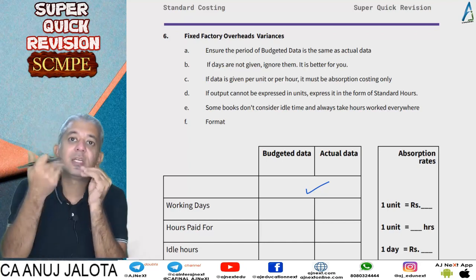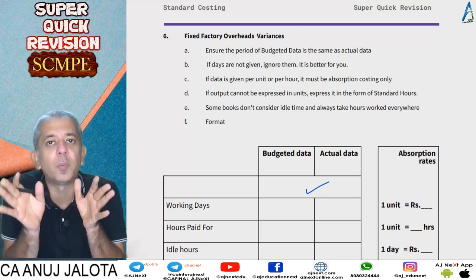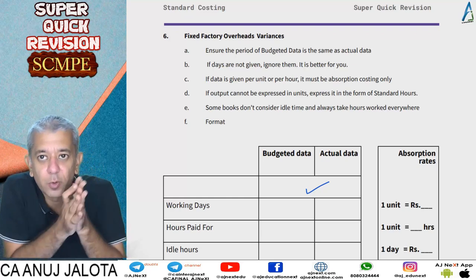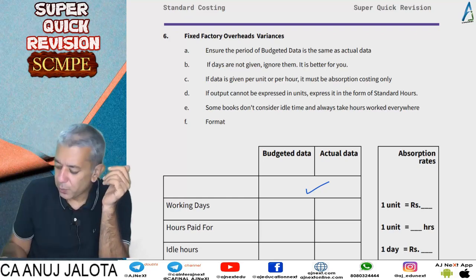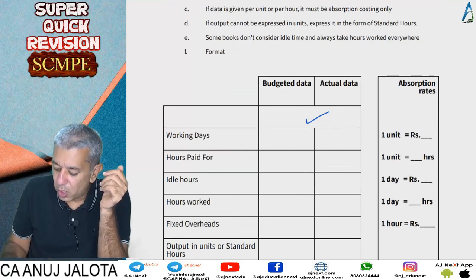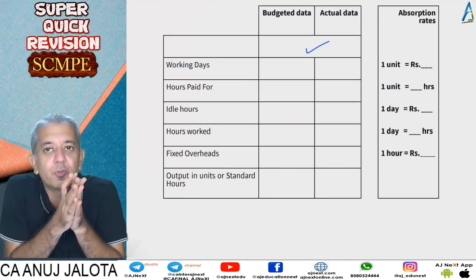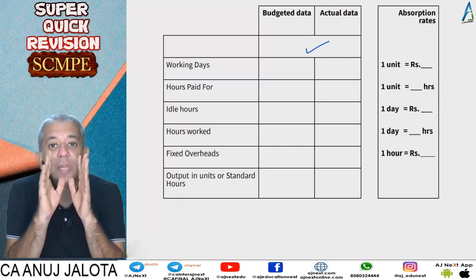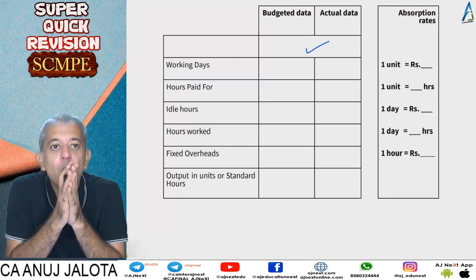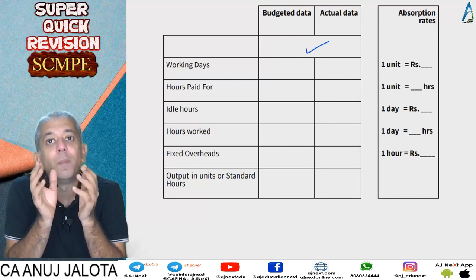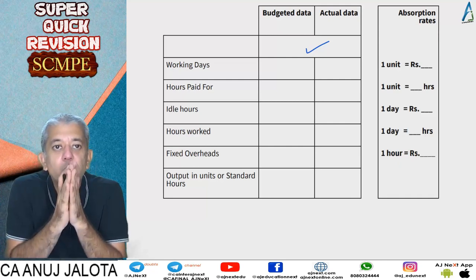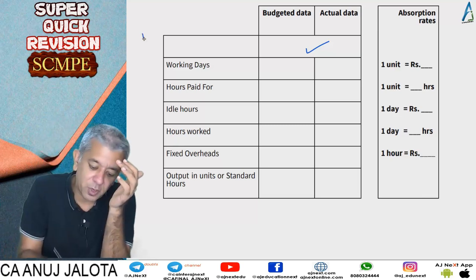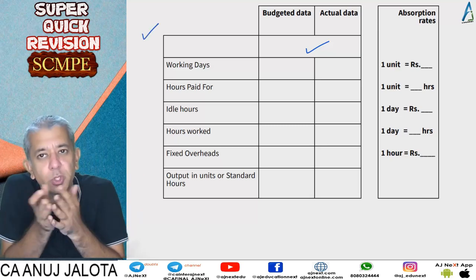If just the data is given and nothing is told about the period, then the period must be the same for both standard and actual data. Now, whenever fixed overheads come up, there are two options: either you follow absorption costing or you follow marginal costing completely.